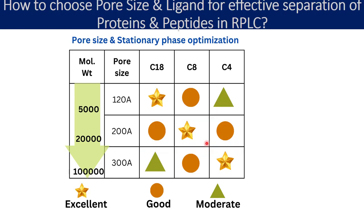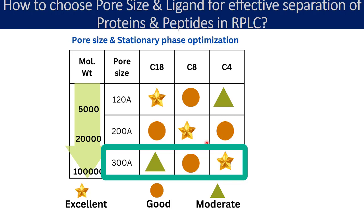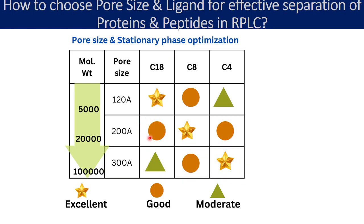For very large molecules around 100,000 daltons molecular weight, you need to select a pore size of 300 angstrom. If you select the higher carbon chain length C18, you can expect moderate efficiency, moderate retention time, and moderate separation. With C8, you can expect good efficiency, good retention time, and good separation. However, with the smaller carbon chain C4, you can expect excellent efficiency, excellent retention time, and excellent separation. I hope this table helps you understand the best combination of pore size and ligand with respect to a given molecular weight compound.